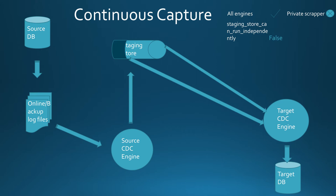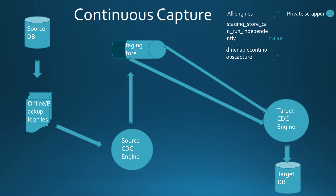The command to enable this feature is called dm_enable_continuous_capture, and correspondingly dm_disable_continuous_capture to stop continuous scraping. These commands can be found in the CDC installation bin folder. At all times, the staging store status can be monitored via the command dm_get_staging_store_status.